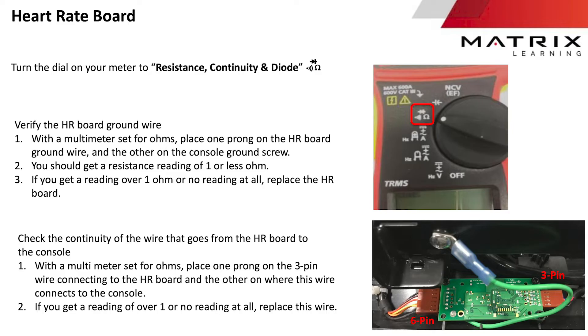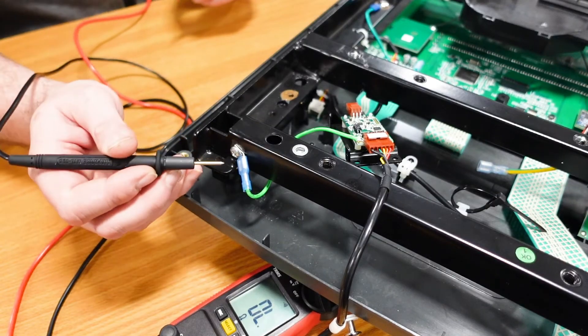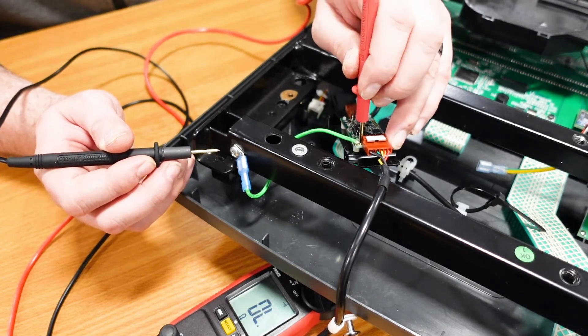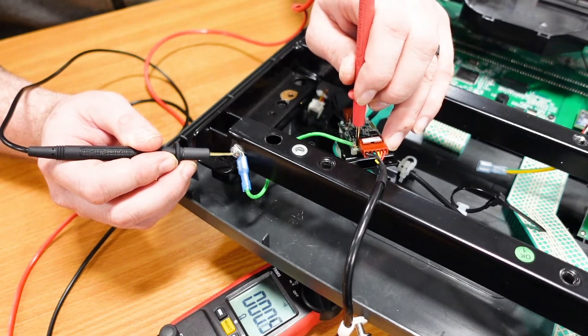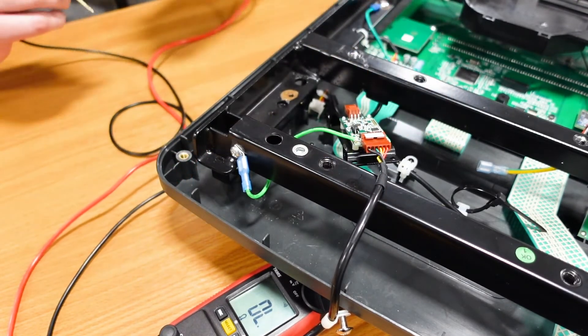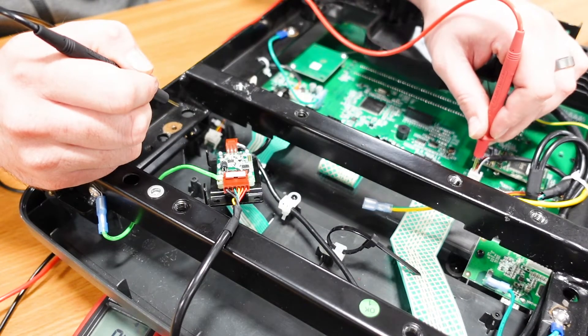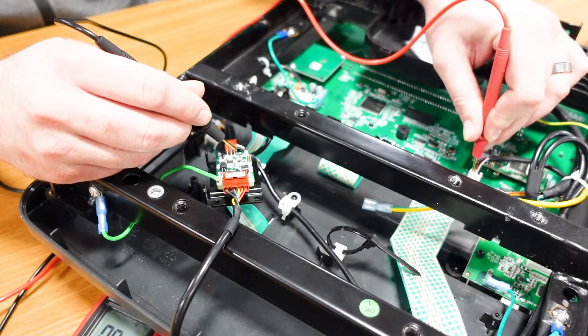Other troubleshooting steps to test the heart rate board involve checking the continuity of the ground wire. And remember to test the continuity of the wire that goes from the heart rate board to the console.